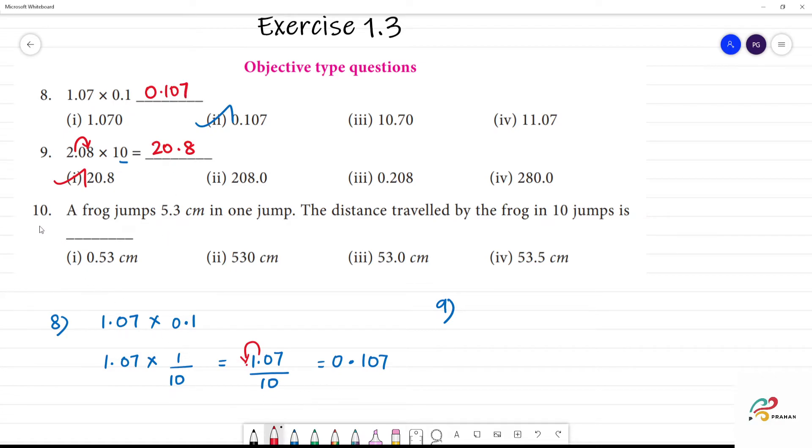Next, tenth one. This frog jumps 5.3 cm in one jump. The distance traveled by the frog in 10 jumps. So 10 jumps is multiplied by 10.